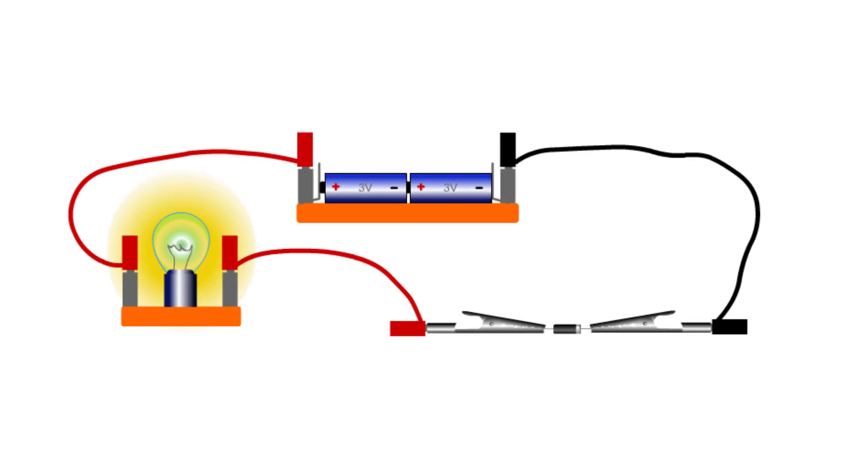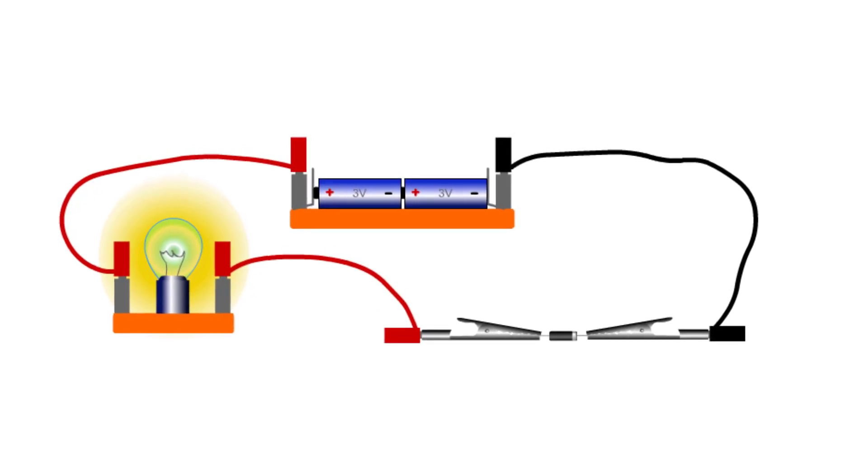A diode acts like a sort of electric valve. It allows current to pass in one direction but not the other.